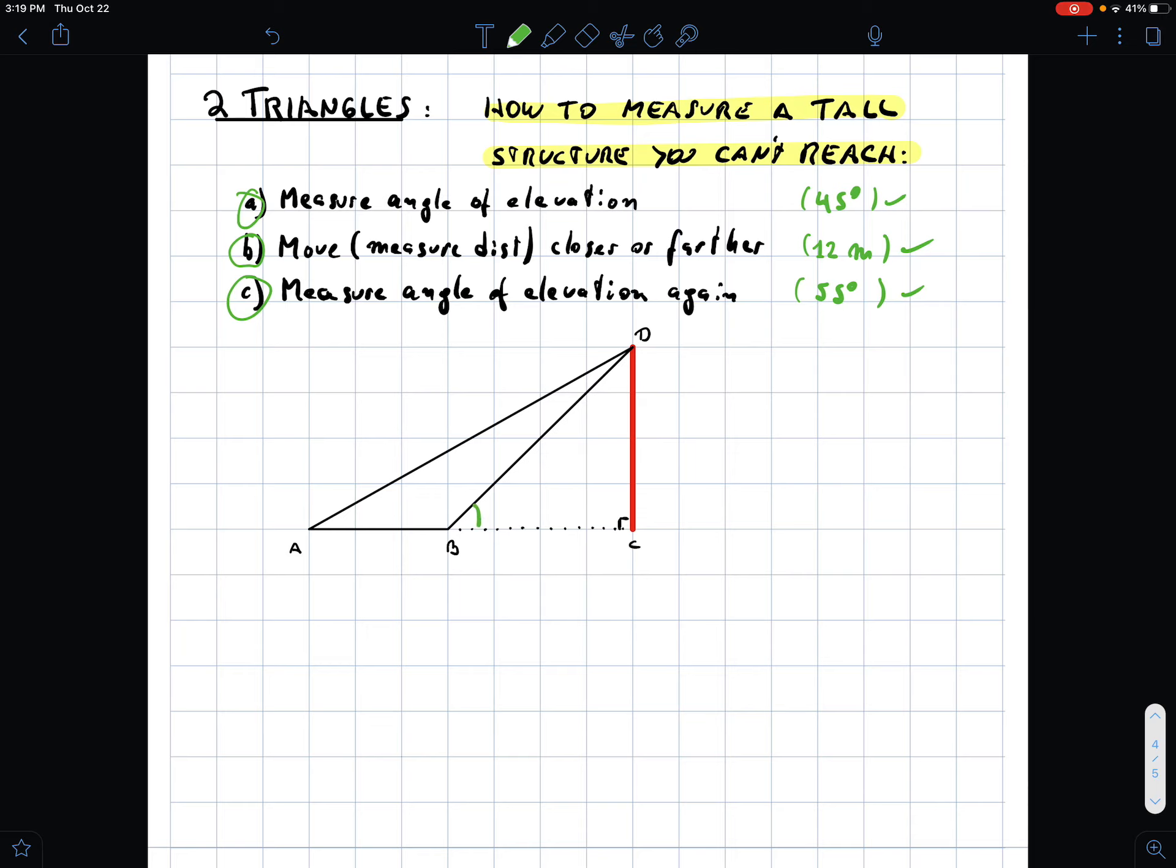So you're going to have an angle over here, and an angle over there. You know that this is going to be 12 meters from A to B.